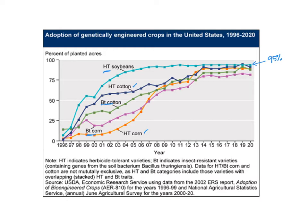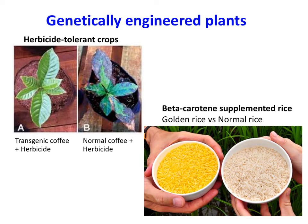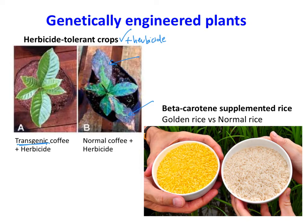Let's look at some more examples of genetically engineered crops. Here are two examples of genetically engineered plants. Herbicide-tolerant crops are shown using coffee as an example. These crops have had herbicide — weed killer, plant killer — sprayed over the top of them. You can see that a normal coffee plant starts to die after being treated with herbicide. That makes sense. But when we have a transgenic plant that is tolerant to the presence of herbicide, the plant can live happily, and what we'd hope to see in the field is that our crops of interest survive while our weeds are devastated.